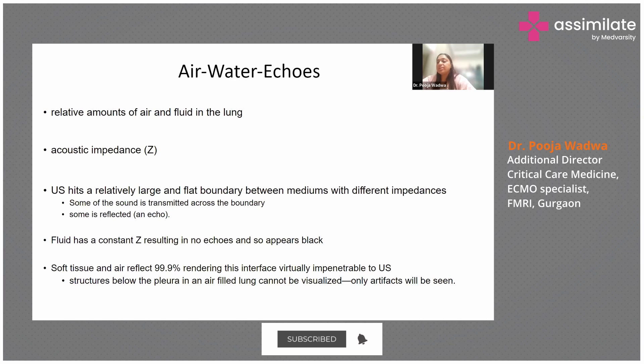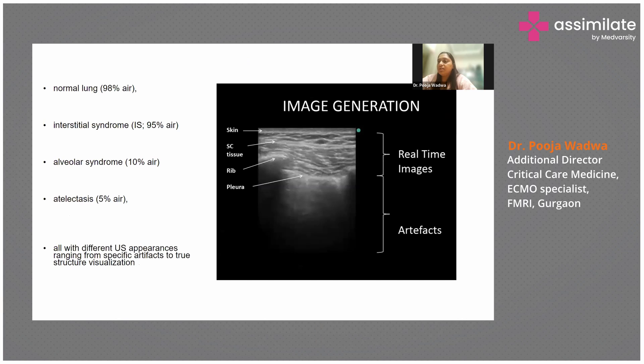This is what you get if you put an ultrasound probe on the chest — this is how the lung looks. The white line is the skin, then you can see the subcutaneous tissue, the ribs, and the pleura. The pleura is a continuous white line. Since 98% of the normal lung is air, you cannot see anything — you can only see artifacts.